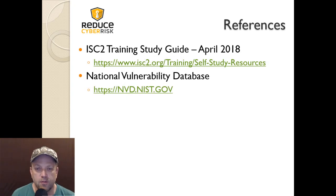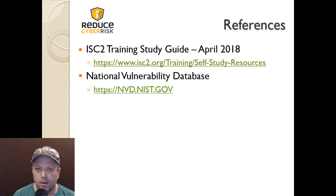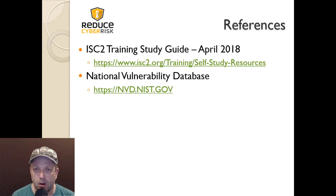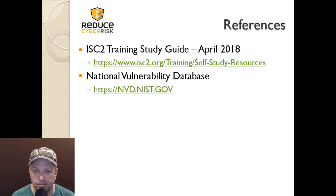These are the references for this section — Section 6. References include the ISC Training Study Guide, April 2018, and the National Vulnerability Database. OWASP wasn't listed here, but just Google 'OWASP' and you'll find it — it will help you in your plans for securing your environment. Let's move on to the next section.